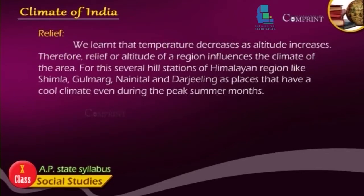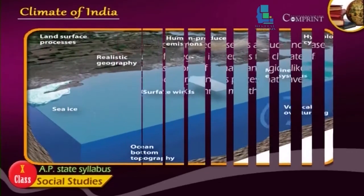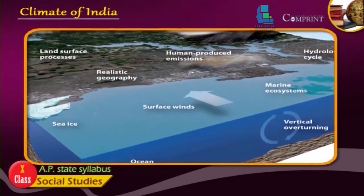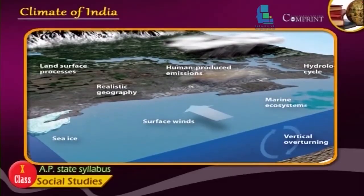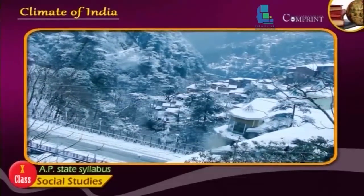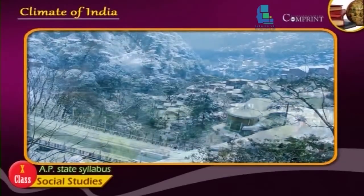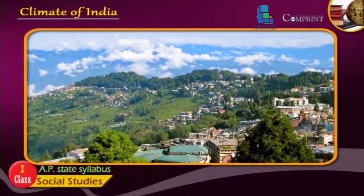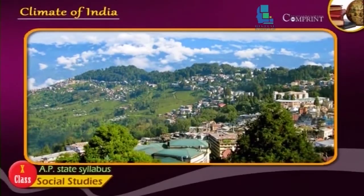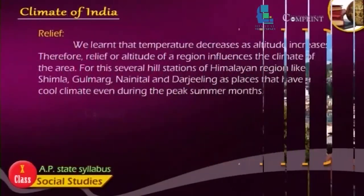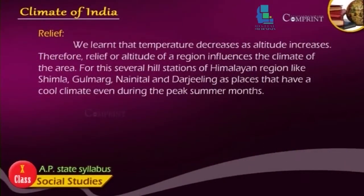Temperature decreases as altitude increases. Therefore, relief or altitude of a region influences the climate of the area. Several hill stations of Himalayan regions like Shimla, Gulmarg, Nainital, and Darjeeling are places that have a cool climate even during the peak summer months.